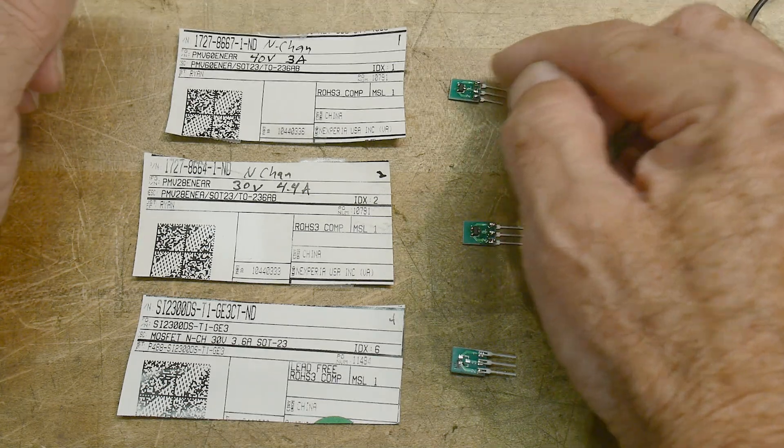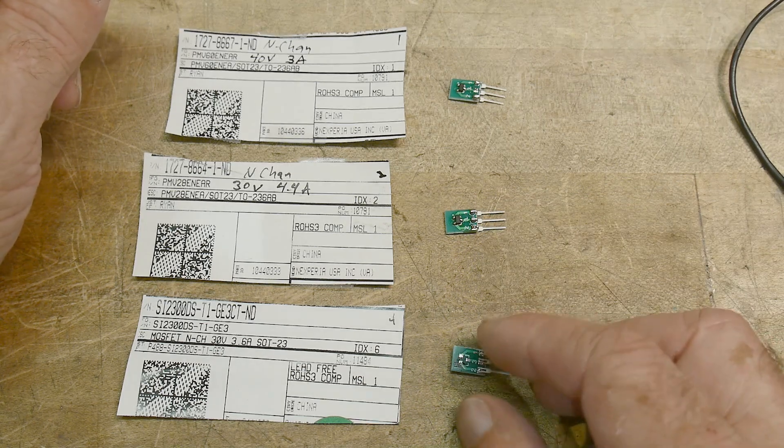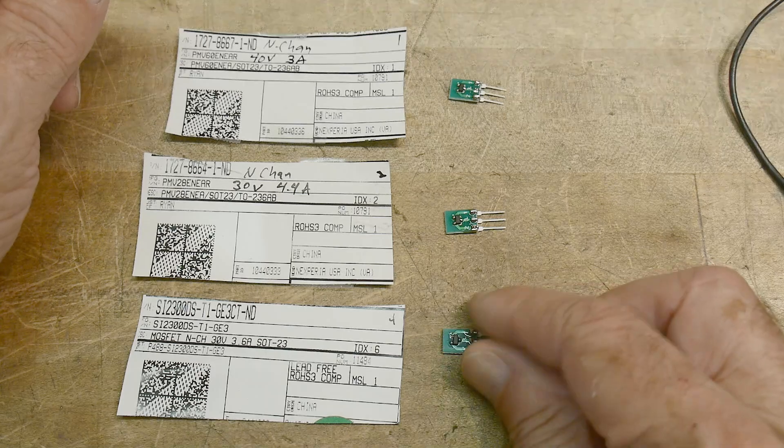This one is 40-volt, 3-amp. This one is 30-volt, 4.4-amp, and this one is 30-volt, 3.6-amp, so very, very similar.